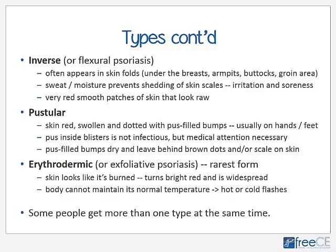With pustular psoriasis, the pus-filled bumps eventually dry and leave behind brown dots or scale on the surface of the skin. The rarest form is erythrodermic psoriasis, also called exfoliative, which often looks like the skin is burned — turning bright red and widespread, usually all across the back or legs. With this type, the body often cannot maintain its normal temperature range, so the person experiences hot or cold flashes, and this is typically a medical emergency.